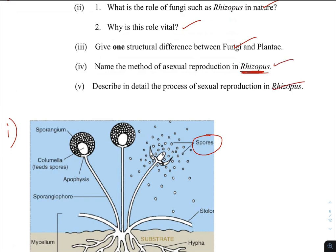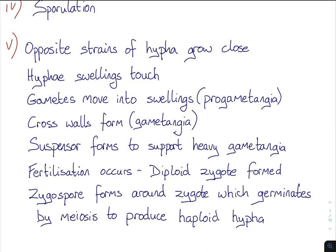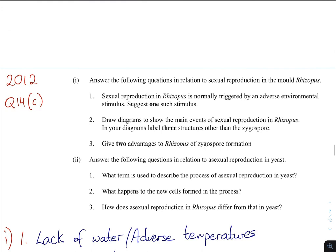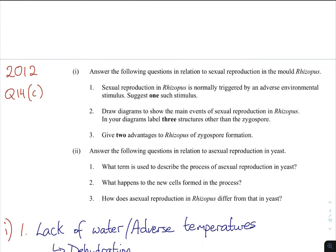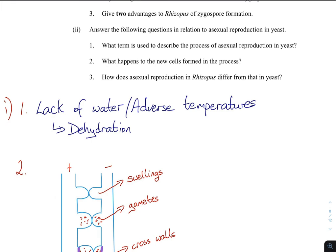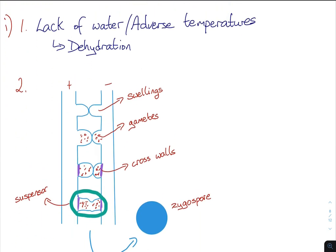Then describe in detail the process of sexual reproduction in Rhizopus — which I'll come back to in a moment. I want to show you a diagram of this. So 2012 — we're halfway there. Sexual reproduction in Rhizopus is triggered by an adverse environmental stimulus; suggest one such stimulus: dehydration, adverse temperatures, lack of water. To the diagrams — this is why I want to come back. Label three structures other than the zygospore. So we have your hyphae: the positive and negative strains. The first step is the hyphae grow close to one another and produce swellings.